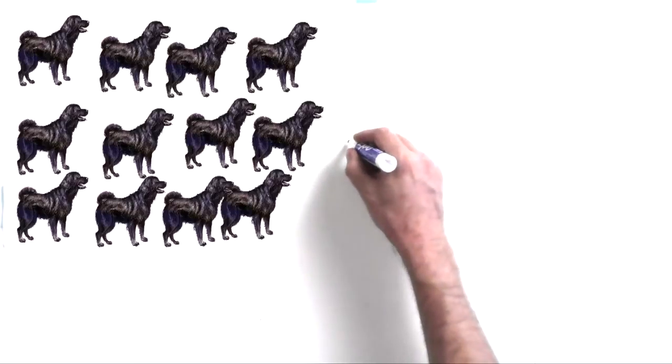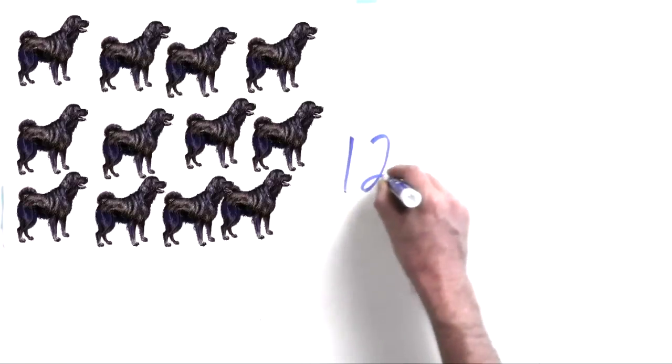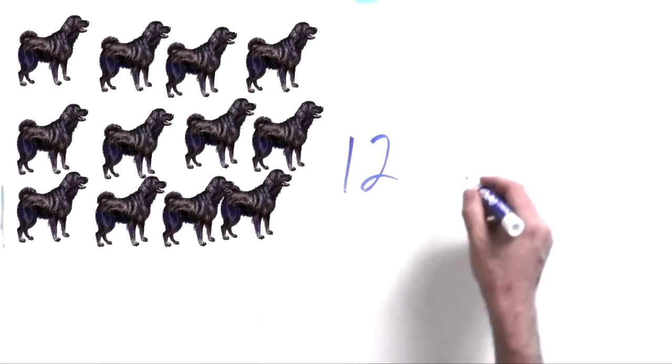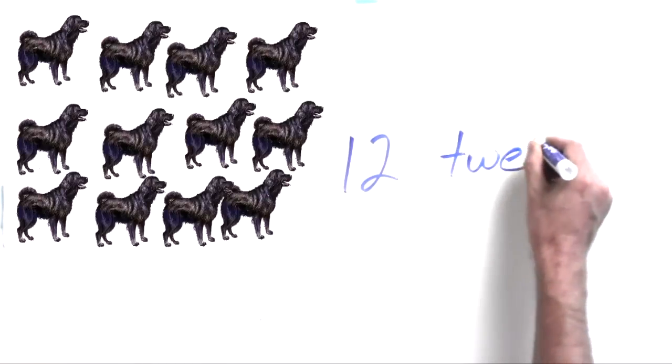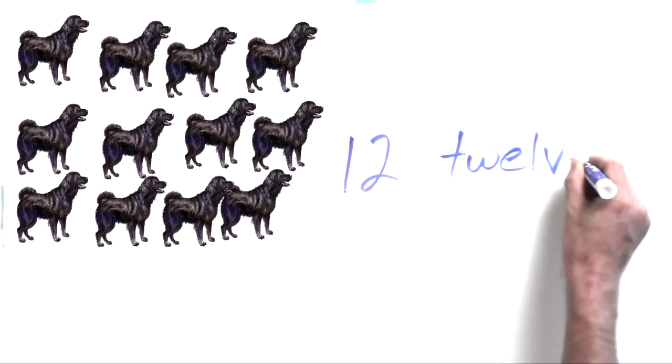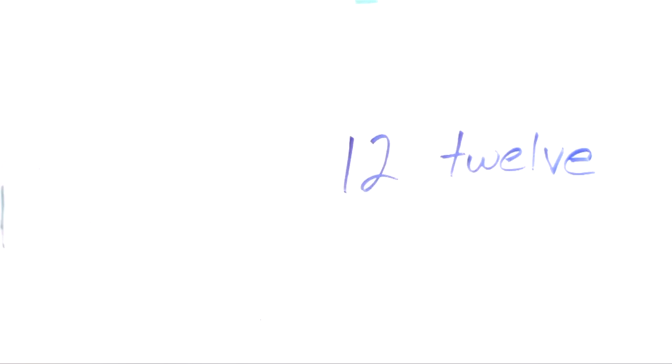12 wild dogs on our screen. So here's how you write the number 12, a 1 and a 2. Pretty easy. And here's how you write the word 12, twelve. There it is, the number 12 and the word twelve. 12 wild dogs on our screen.